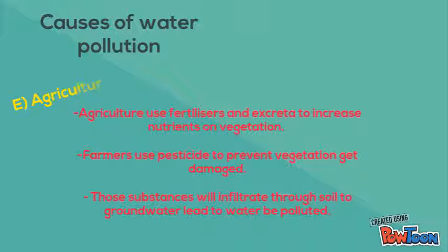Last but not least, the agriculture sector. Agriculture uses fertilizer and animal waste to increase nutrients in vegetation, and farmers use pesticides to prevent vegetation from getting damaged. Those substances infiltrate through the soil into groundwater, leading to water becoming polluted.